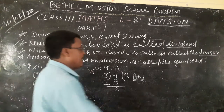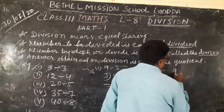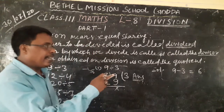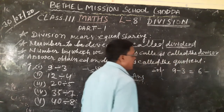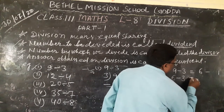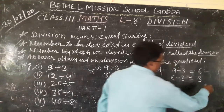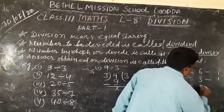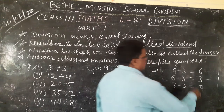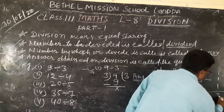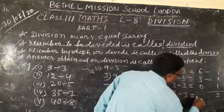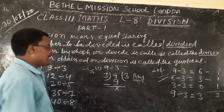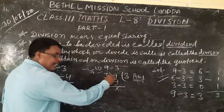Another way — the subtraction method. 9 minus 3 equals 6. Again, 6 minus 3 equals 3. Again, 3 minus 3 equals 0. How many times did you subtract? 3 times. So 9 divided by 3 equals 3. This is the subtraction method, and the other is the division method.